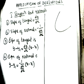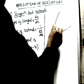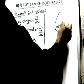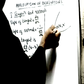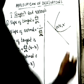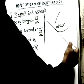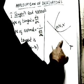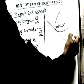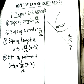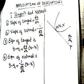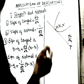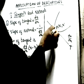Suppose we are having a curve and we are drawing a tangent at a point P(x₁, y₁). A tangent touches the curve at one point. The slope of the tangent is nothing but the differentiation of the curve — slope of the tangent is given by dy/dx at the point (x₁, y₁).